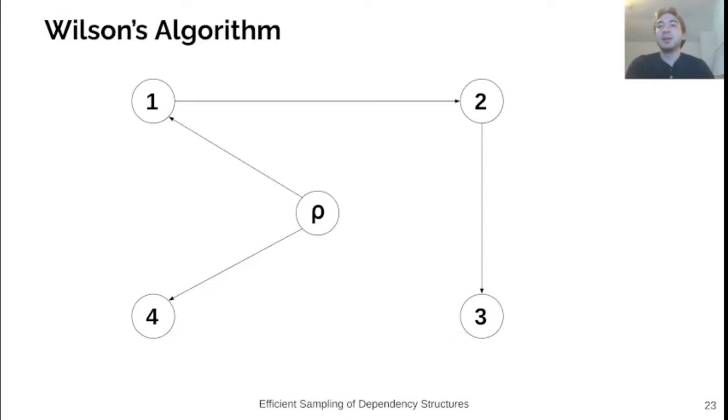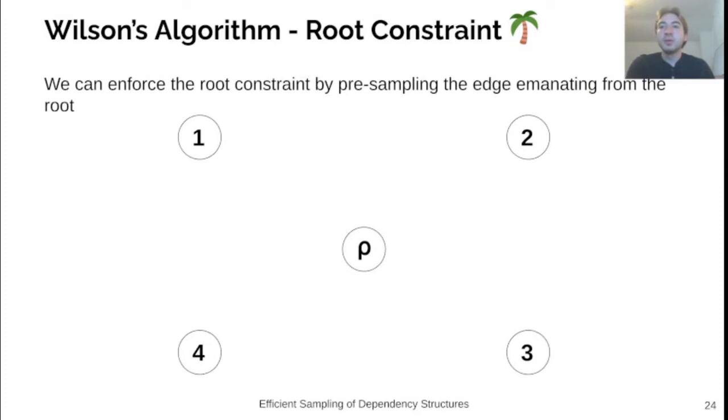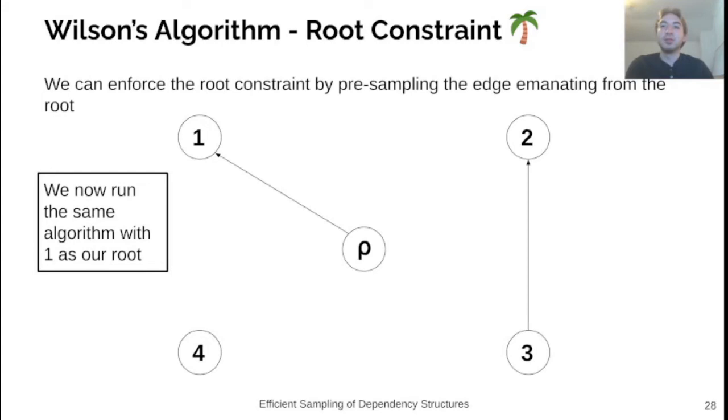However, as we can see, this tree we have sampled contains multiple edges emanating from the root. We can solve this problem by simple modification to take a first step that samples the edge emanating from the root. So if we consider all edges emanating from the root, we can randomly sample one. In this case, we'll pick the edge from the root to node 1. We can then run the algorithm as before, with the exception that we ignore the outgoing edges from the root and get a tree with only one edge emanating from the root.